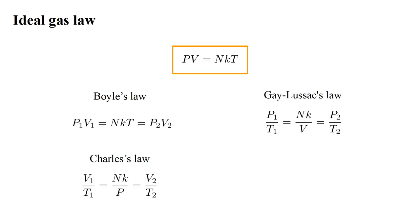Dividing by v and t, we get p over t equals n k over v. For constant n and v, p over t is constant. This is the law of Gay-Lussac. And dividing by k t, we get n equals p v over k t. For constant p, v and t, n is constant. This is Avogadro's law.